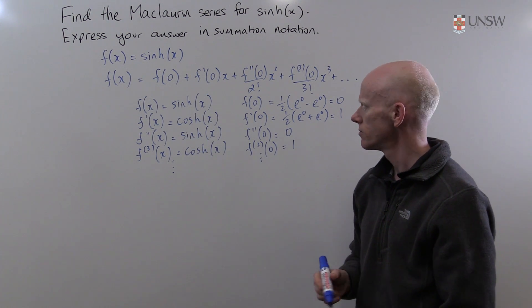Now that I've established this table I can write down directly the Maclaurin series for sinh(x). So sinh(x) is f(0) which is 0 plus f'(0) which is 1 times x, f''(0) which is 0. I'm not going to worry about the rest because anything multiplied by 0 is 0. The third derivative at x equals 0 is 1 times x cubed over 3 factorial.